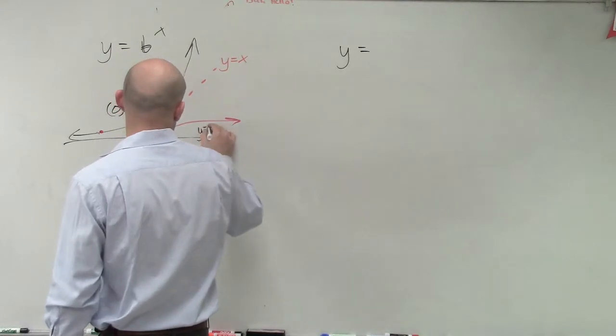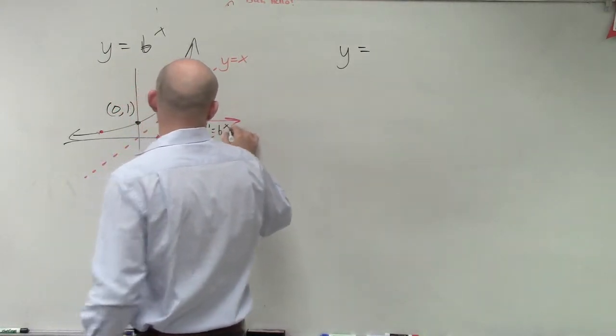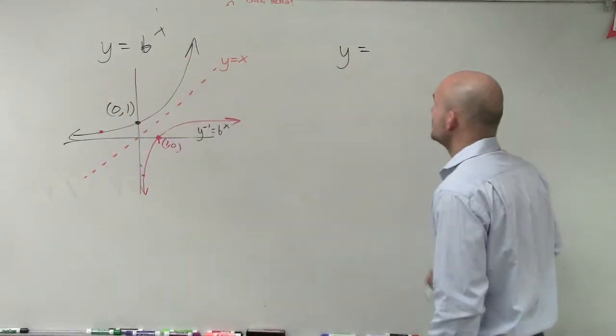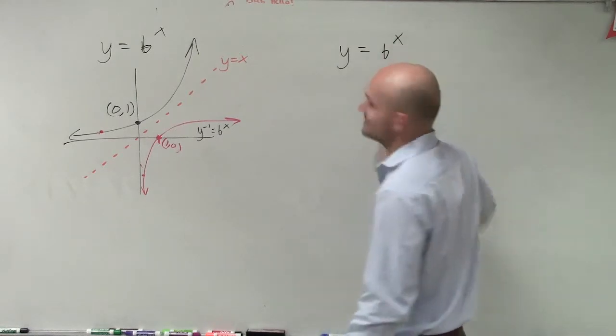So we do y equals, so I'm sorry, here's y equals b to the x. Then this is y inverse equals b to the x, right? That's your inverse function. So let's do y equals b to the x.